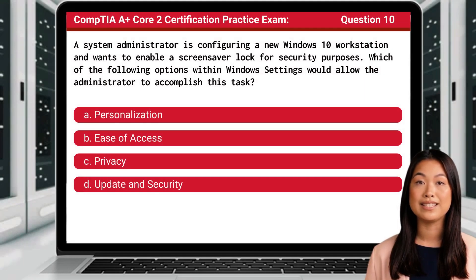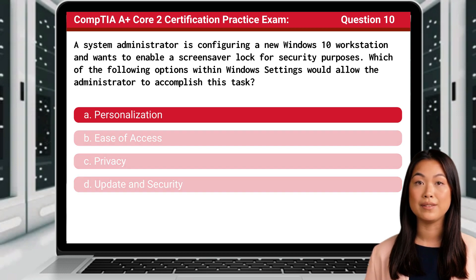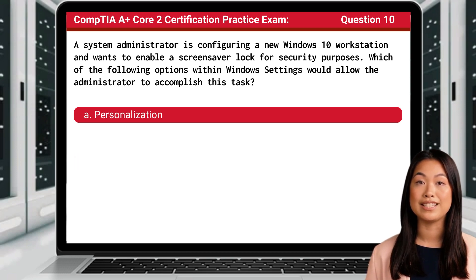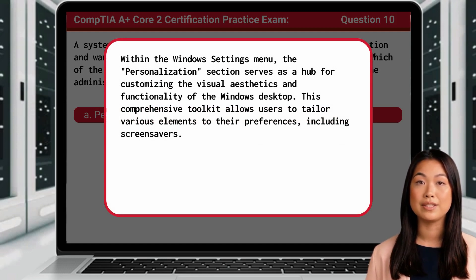Question 10. A system administrator is configuring a new Windows 10 workstation and wants to enable a screensaver lock for security purposes. Which of the following options within Windows settings would allow the administrator to accomplish this task? The answer is A: Personalization. Within the Windows settings menu, the personalization section serves as a hub for customizing the visual aesthetics and functionality of the Windows desktop. This comprehensive toolkit allows users to tailor various elements to their preferences, including screensavers.